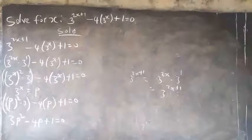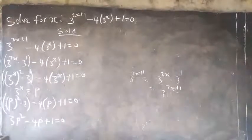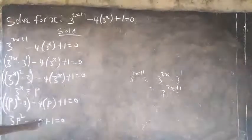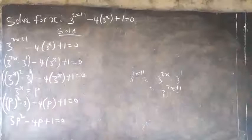So p raised to the power of 2 is p squared, and 3 times p squared is 3p squared, giving us 3p squared minus 4p plus 1 equals 0. I'll be using the factorization method here. 3 times 1 is 3.